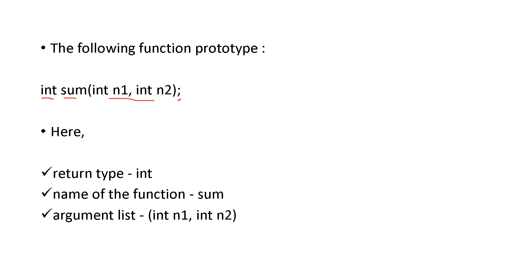Here a semicolon is present, which means this is a declaration. If it were a definition, you would write the name, return type, and arguments of the function, then open the curly bracket, write the code, and close the curly bracket — that is a function definition. The semicolon here means this is a function prototype.